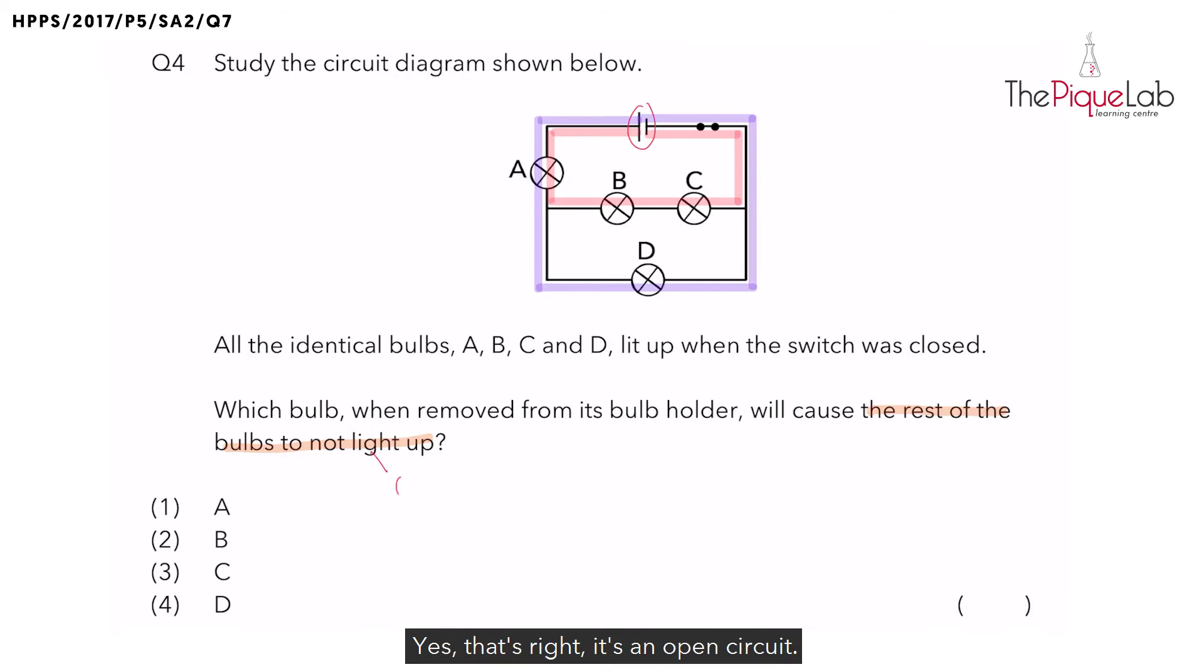Yes, that's right. It's an open circuit. An open circuit will not allow electricity to flow through the other bulbs, hence preventing them from lighting up.